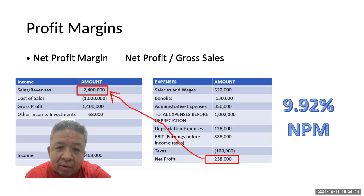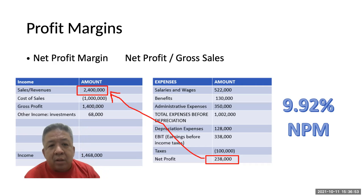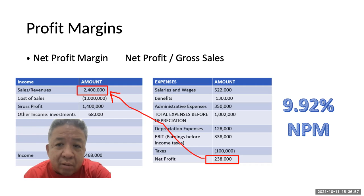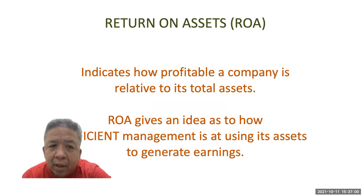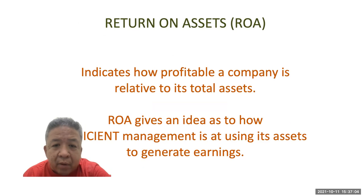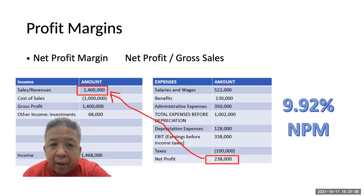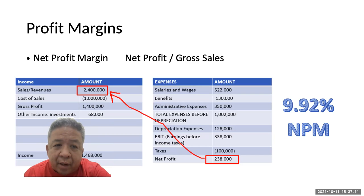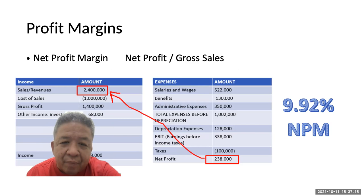You have to compare similar industries. Then of course we have the net profit margin — this is the bottom line, the final profit, divided by total sales, which gives us 9.92% NPM. That means for every 100 pesos, you're getting about 9 pesos, or 9% net profit margin.